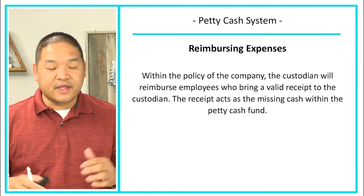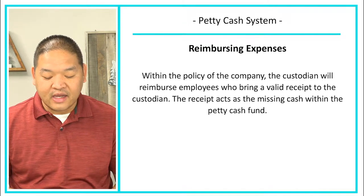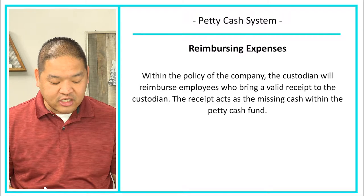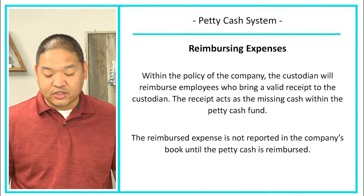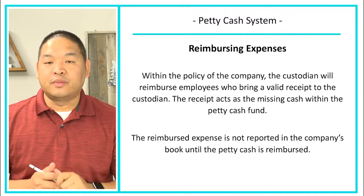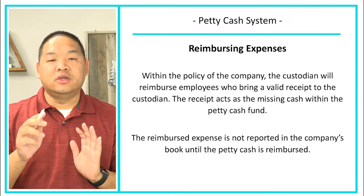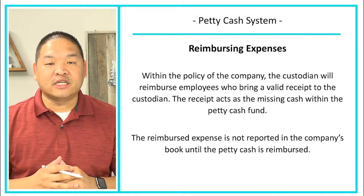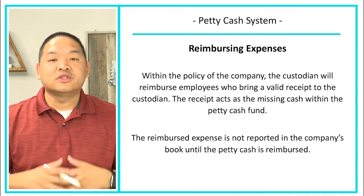Once the fund is established, we start reimbursing expenses. Within company policy, the custodian reimburses employees who bring a valid receipt. The receipt acts as the replacement for the missing cash in the fund. For example, if I have $100 in petty cash and you need a $20 reimbursement, you give me a $20 receipt and I give you $20 cash. Now the fund has $80 cash plus a $20 receipt, still totaling $100.